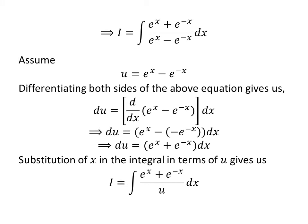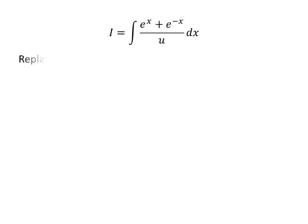Substituting e^x - e^(-x) with our assumed value u in the integral i gives us i equal to the integral of (e^x + e^(-x)) / u. Now replacing (e^x + e^(-x)) dx with du, which we found earlier, gives us i equal to the integral of 1/u with respect to u.